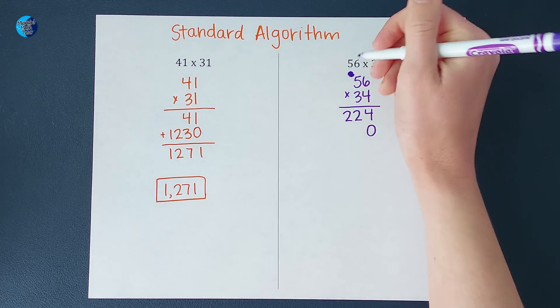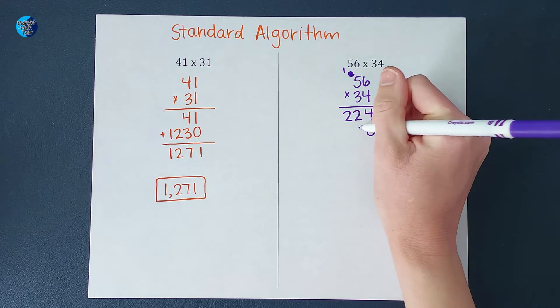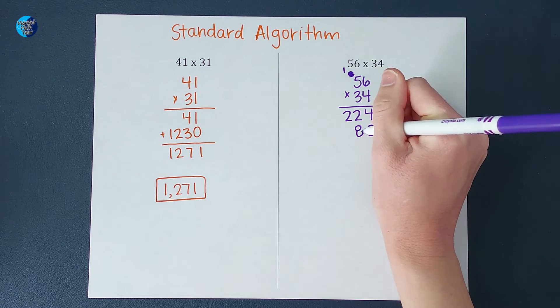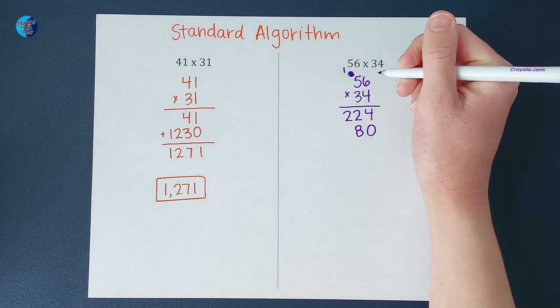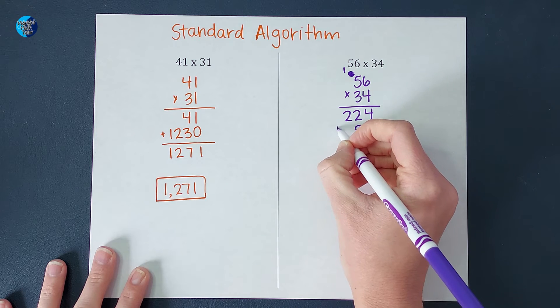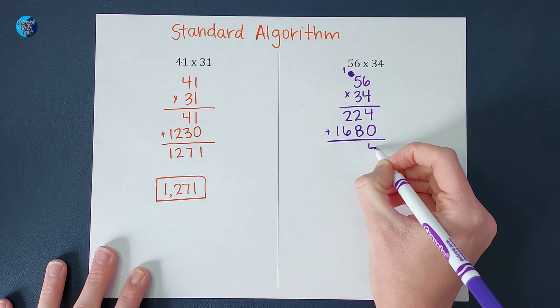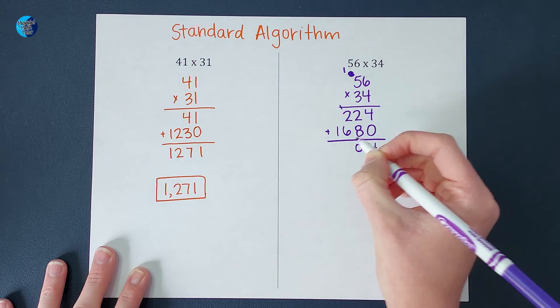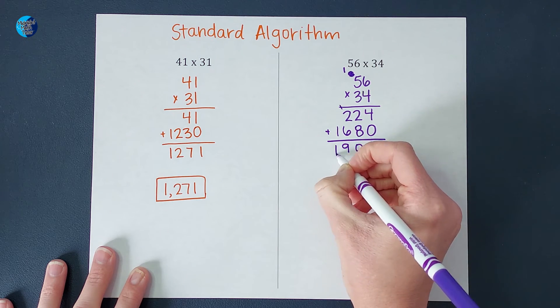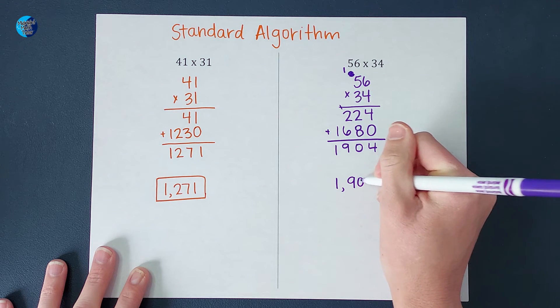Okay, 3 times 6 gives me 18. So I need to put a 1 here, 18. And 3 times 5 gives me 15. Plus that 1 gives me 16. And then I'm going to add these up. And I end up with 1,904.